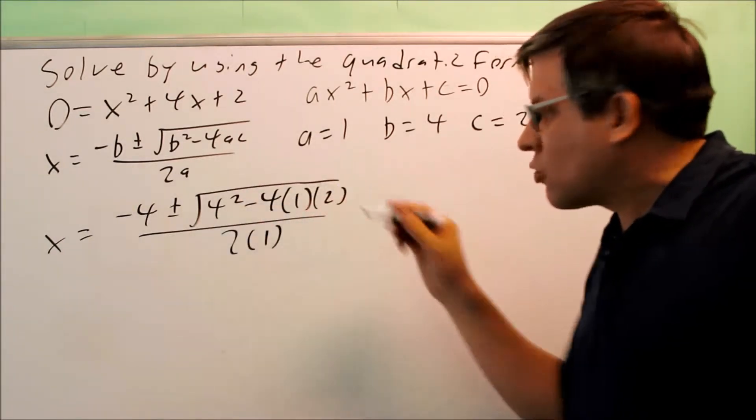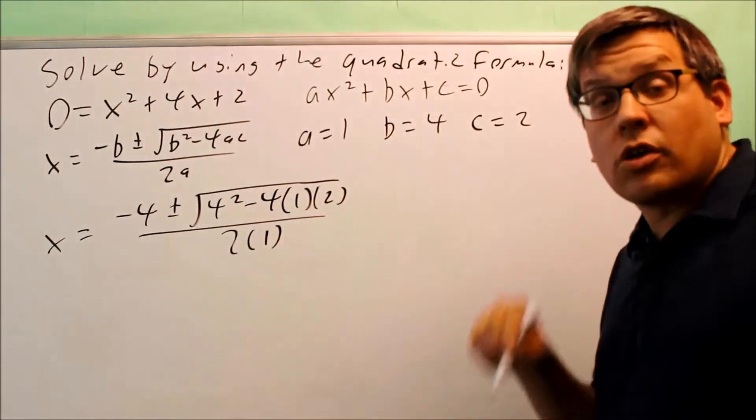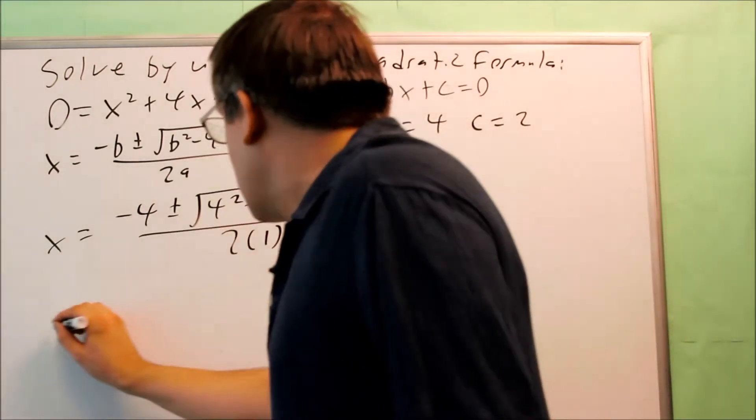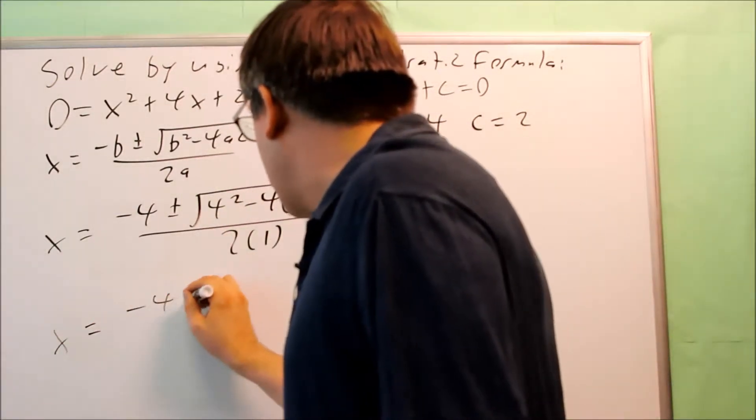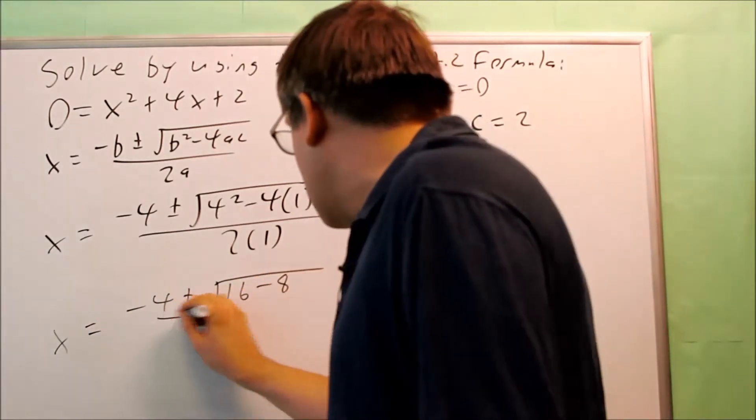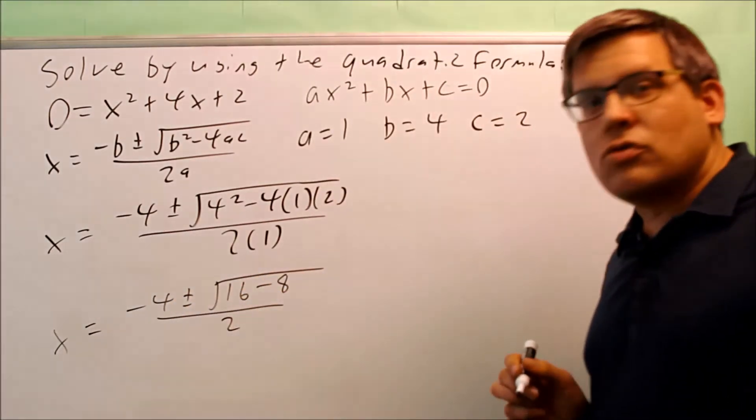If the number inside the square root can be broken down further, you do want to do that as well to get the most simplified answer. So next, we're going to do negative 4 plus or minus the square root of 16 minus 8, and then I have a 2 on the bottom.